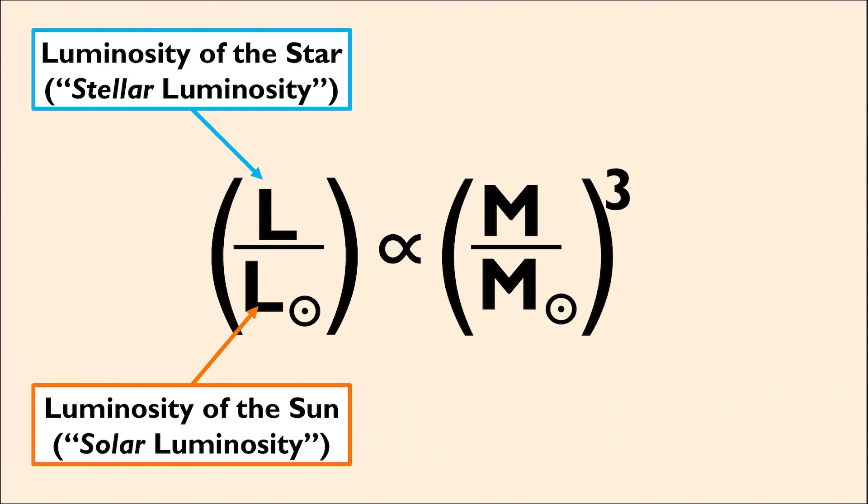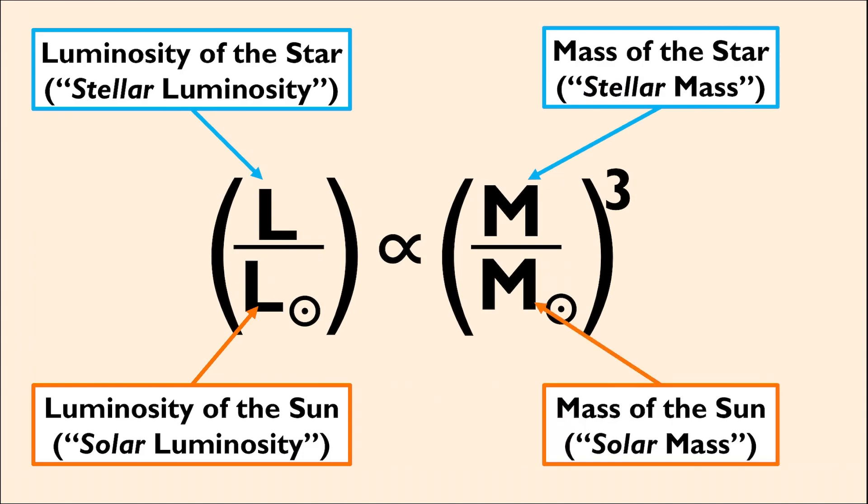We can say the same about the mass ratio on the right. The numerator is the mass of the star, and the denominator is the mass of the Sun, and this fraction is cubed. Now for that example. You can see it in the next video.